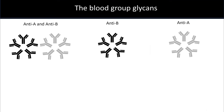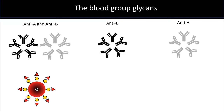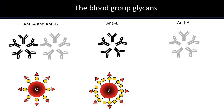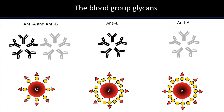I am focusing on the minimal blood group determinant, which is the trisaccharide. It is well known that individuals possess antibodies to ABH blood group antigens that are not present within their body. For example, if you're blood type O, you will have anti-A and anti-B antibodies. If you're blood type A, then you will have anti-B. And if you're blood type B, then you'll have anti-A. However, studies have shown that this is not always true, and there are also some antibodies that are detected unexpectedly.